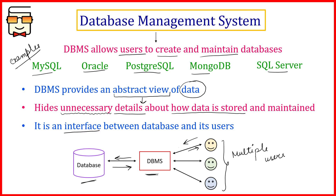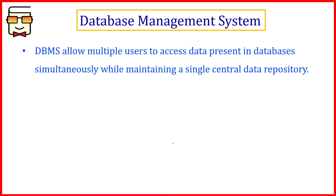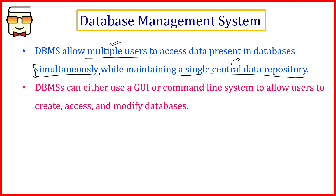DBMS can handle multiple users at the same time, which was not possible with the traditional file system. It ensures no mixing of information takes place even when multiple users are accessing the same database simultaneously. It does so by maintaining a single data repository at a central location, so multiple copies are avoided and duplicacy or redundancy gets eliminated.